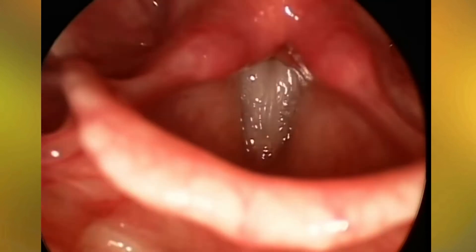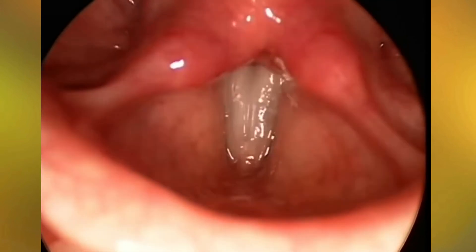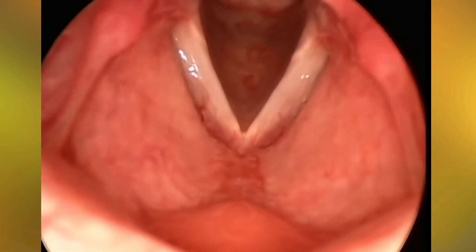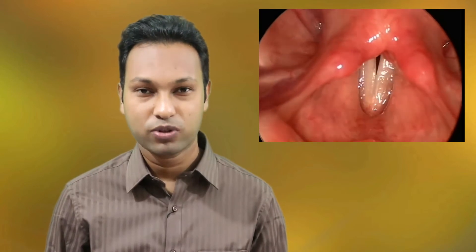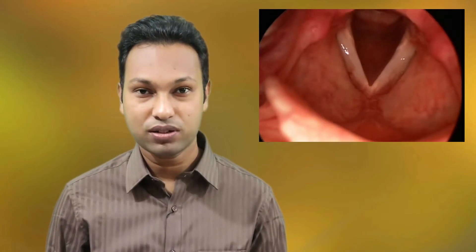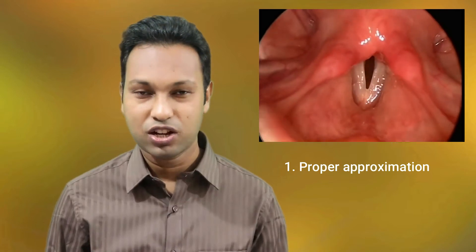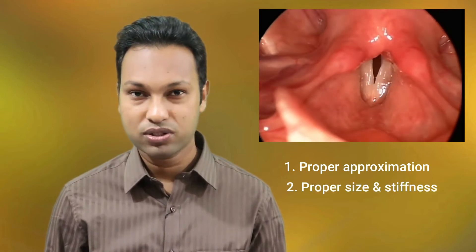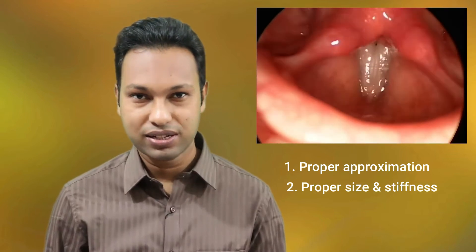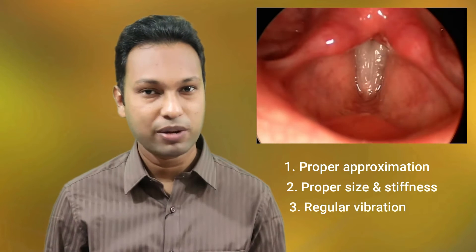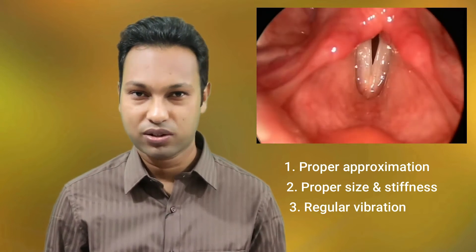To know the etiopathophysiology, first let's have a look at this picture. This picture shows the vocal cord movements of a person with normal phonation. Three factors are necessary for production of normal speech: number one, proper approximation of the vocal cords; number two, the vocal cords must be of proper size and stiffness; number three, the vocal cords should vibrate regularly in response to the air column.